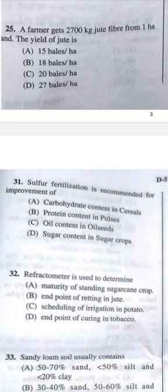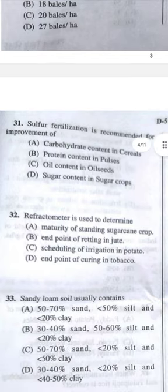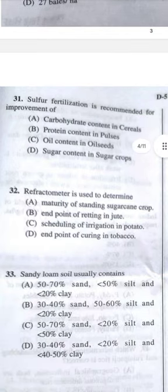Question 31: Sulfur fertilization is recommended for the improvement of C — oil content in oilseed crops. Question 32: A refractometer is used to determine A — maturity of standing sugarcane crop.